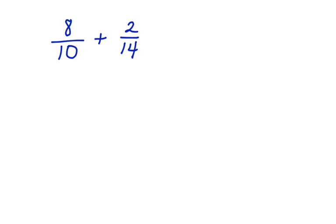8 tenths plus 2 fourteenths. First, look at 8 tenths. 8 tenths is almost a whole, so let's round 8 tenths up to 1, plus 2 fourteenths. It's a pretty small fraction. Let's simplify it. 2 goes into 2 one time, 2 goes into 14 seven times. Our estimate is 1 and 1 seventh.